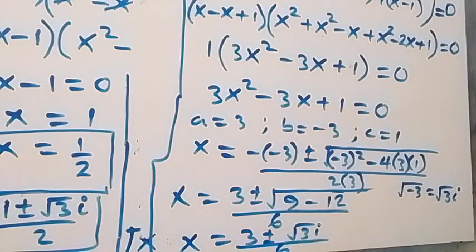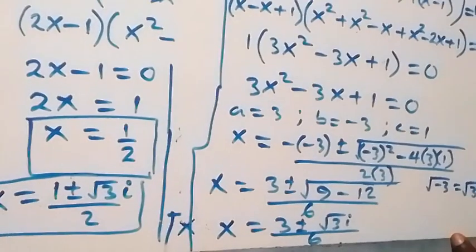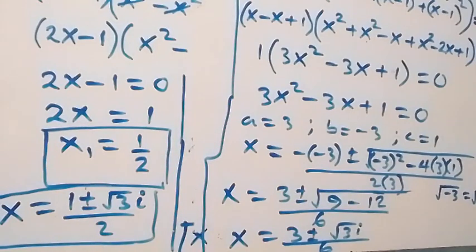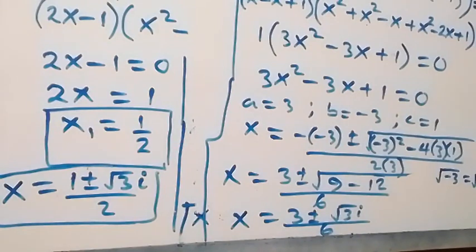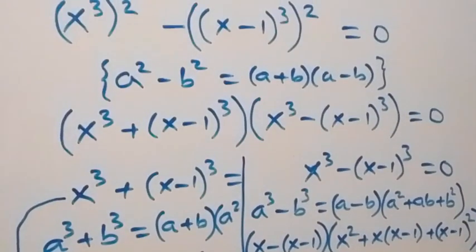Altogether we have five solutions: one real solution x = 1/2, two complex solutions x = (1 ± i√3)/2, and two more complex solutions x = (3 ± i√3)/6. Thank you for watching — don't forget to subscribe to my channel, turn the notification bell on, share this video, give it a thumbs up. See you next lesson, bye for now.